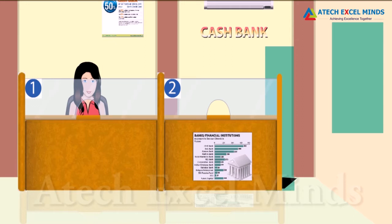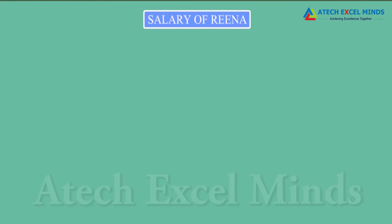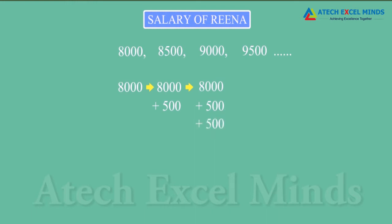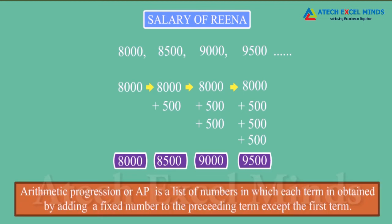Rina works in a bank. Her monthly salary is Rs. 8,000 with an annual increment of Rs. 500. This forms an arithmetic progression. Arithmetic progression or AP is a list of numbers in which each term is obtained by adding a fixed number to the preceding term except the first term.